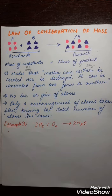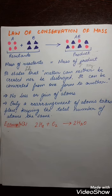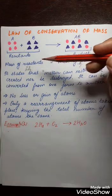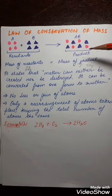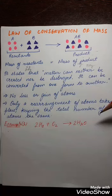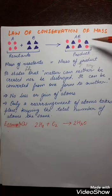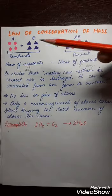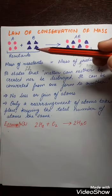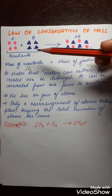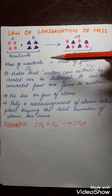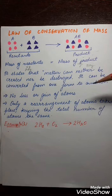To repeat: the law of conservation of matter says that the amount of matter remains the same for reactants and products, even when matter changes its form. The weight after the reaction will be exactly the same as the weight before the reaction. That is why it is said the amount of mass is conserved.